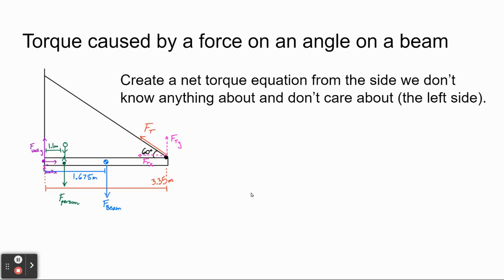Now I'll create a net torque equation, similar to net force equations, but I need to determine which rotations are positive and which are negative. With the pivot at the purple point on the left: the green force (person) causes clockwise rotation — negative. The beam's weight also rotates it clockwise — also negative. The wall forces will be zero. FTY causes counterclockwise rotation — positive.